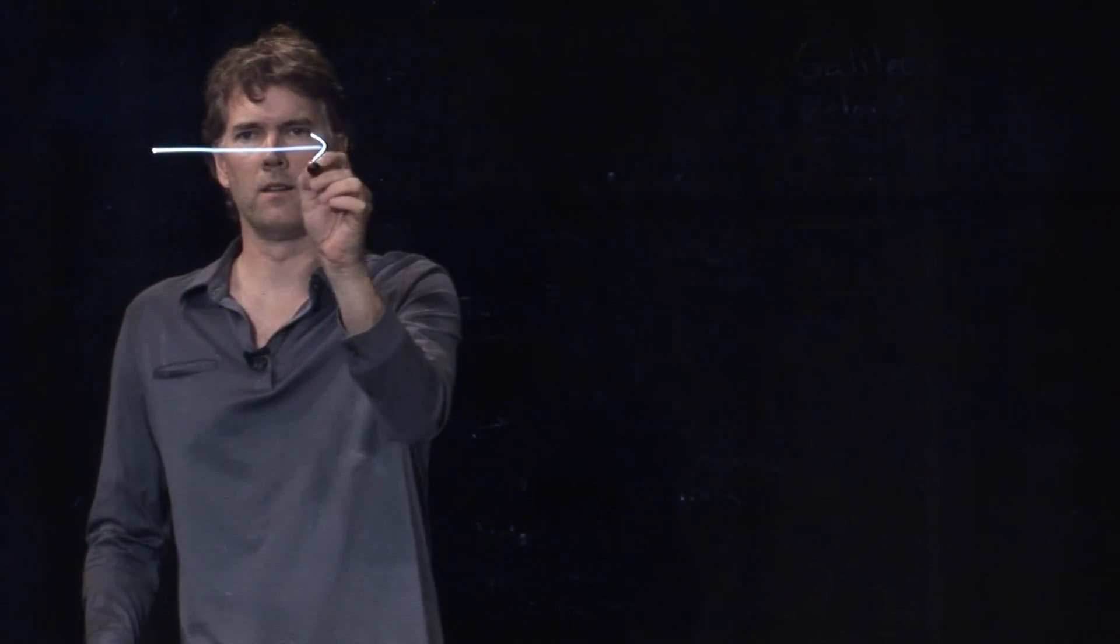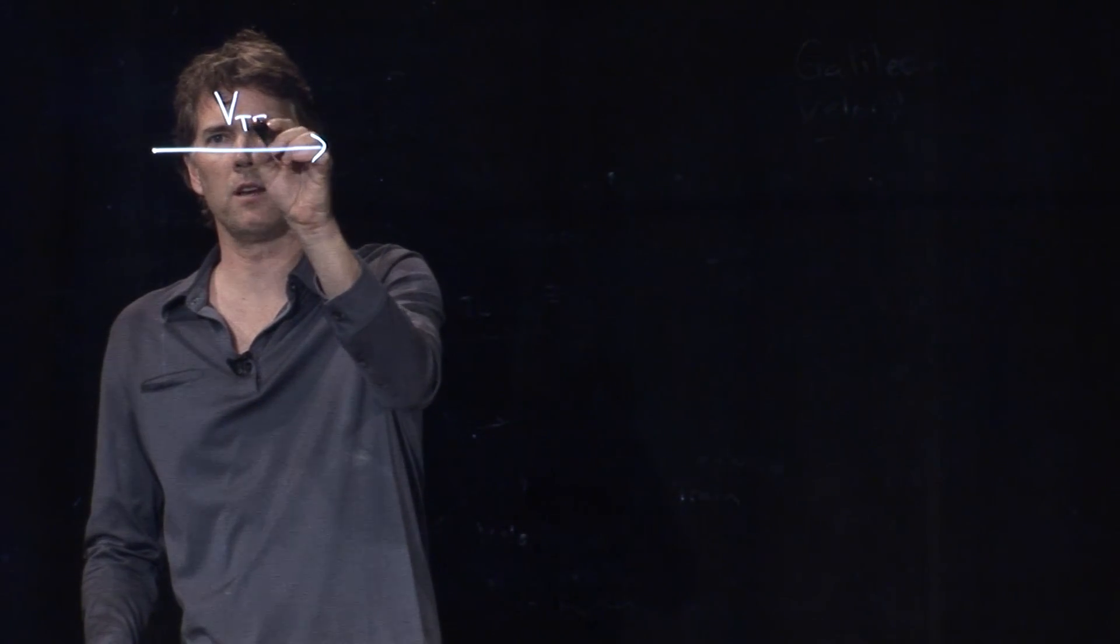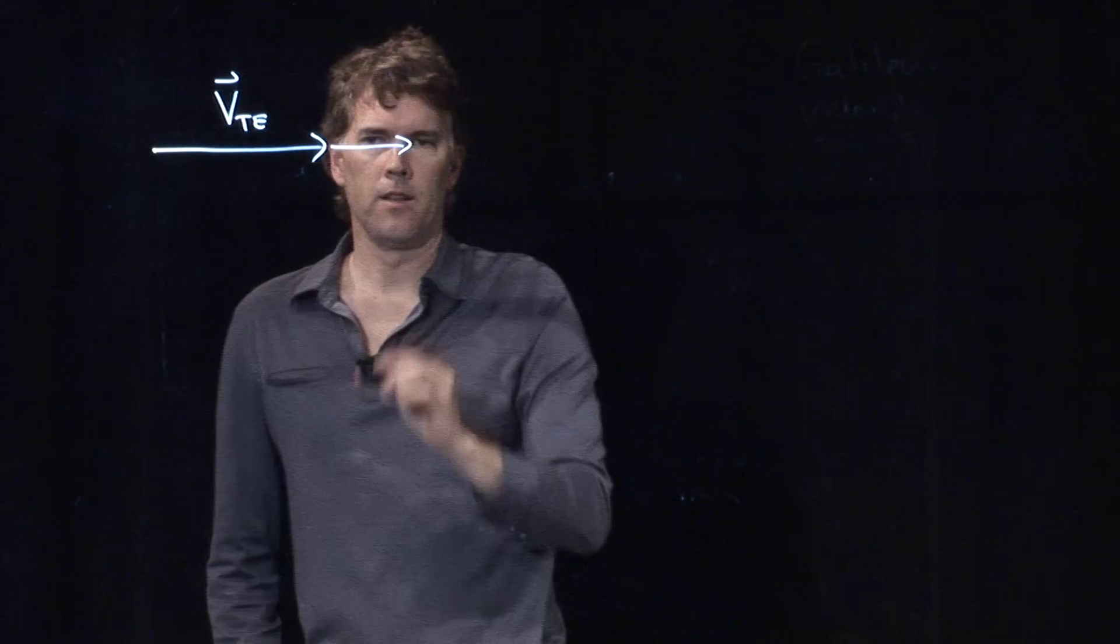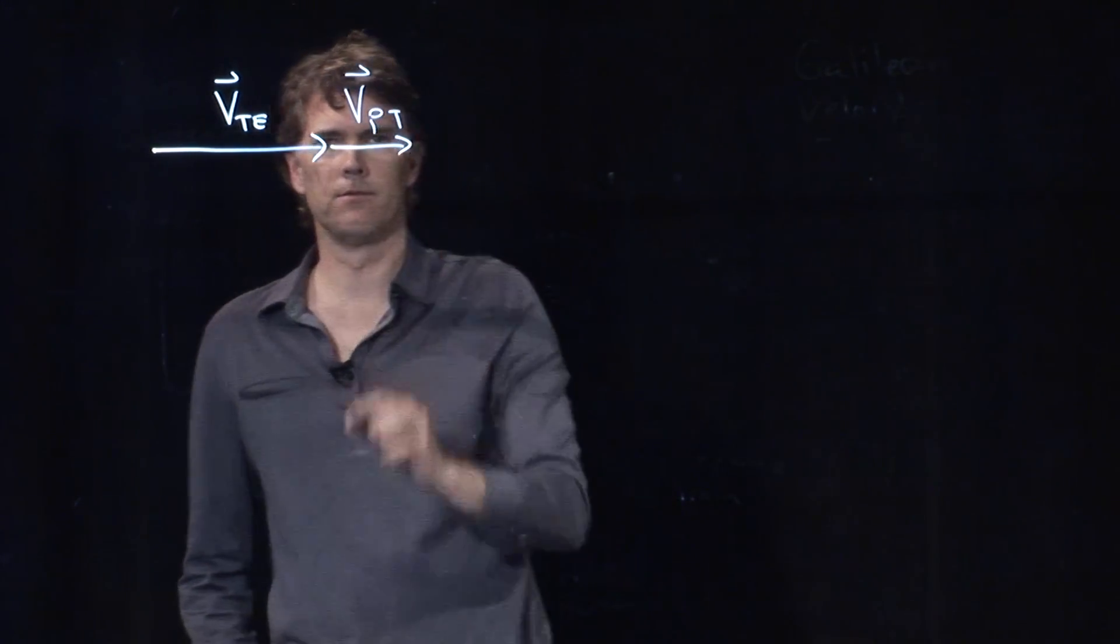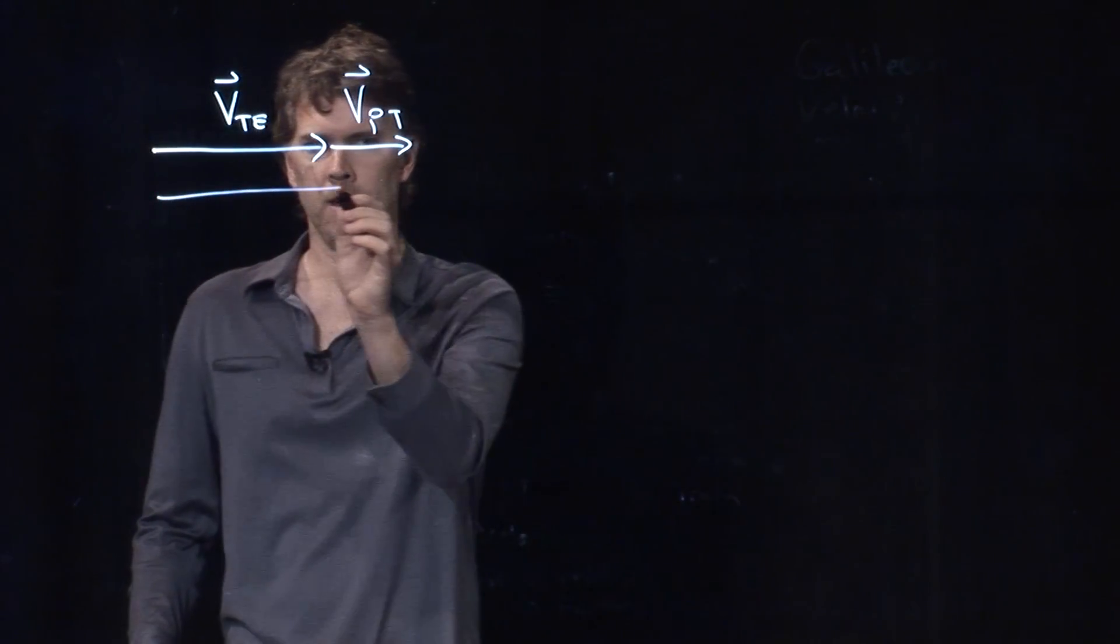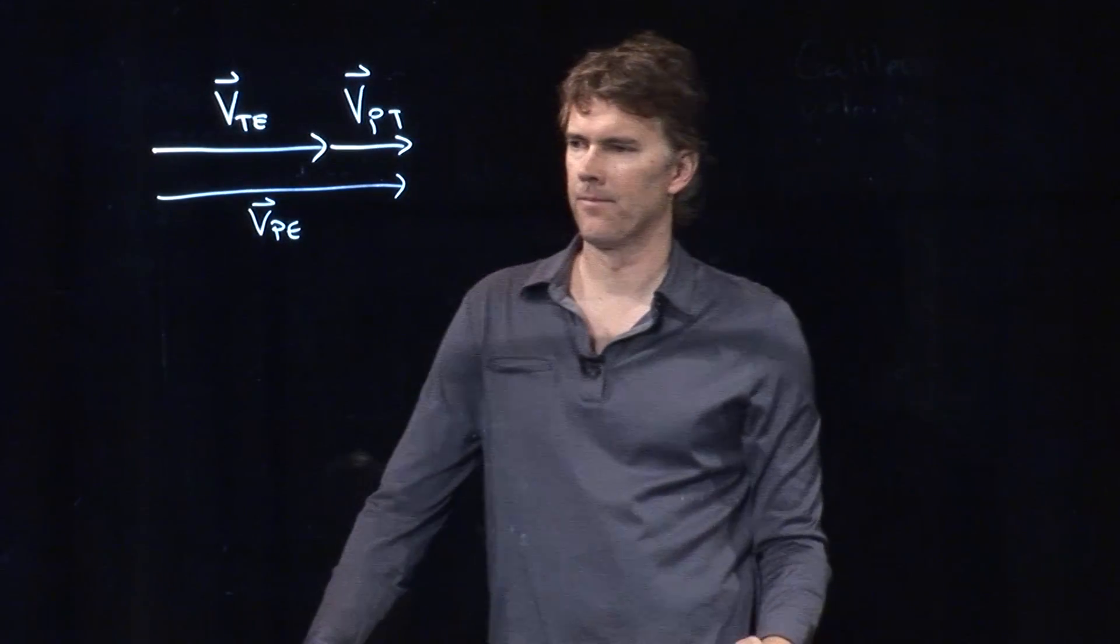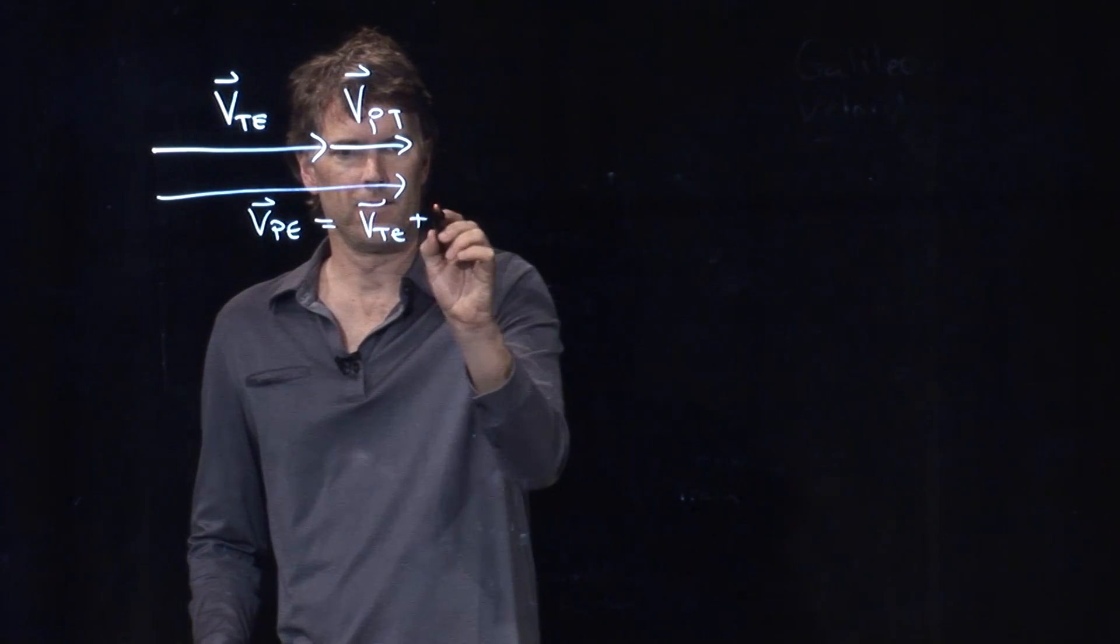We said that the train is doing this. This is V of the train relative to the Earth. If I add to that the vector of the person relative to the train, then I just do a tip-to-tail method, and I add those two vectors up, and I get the velocity of the person relative to the Earth.